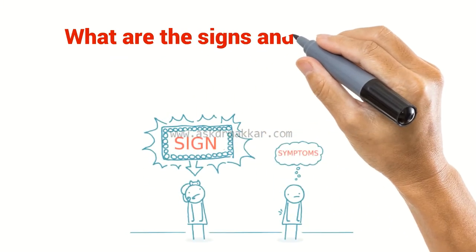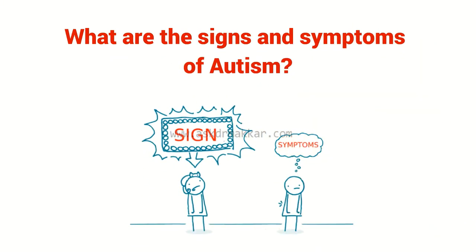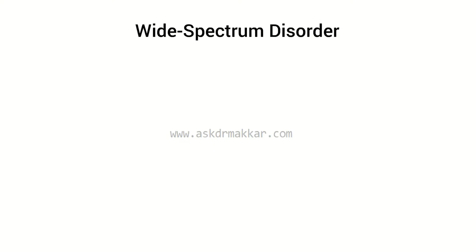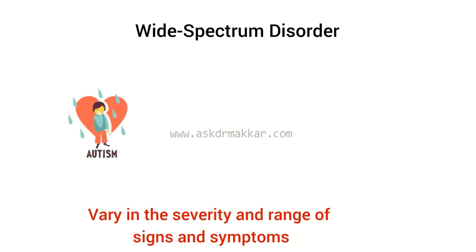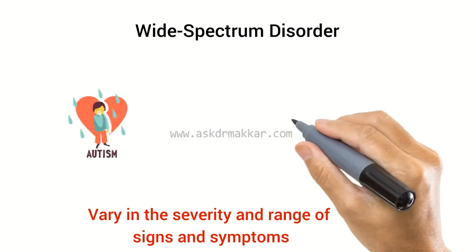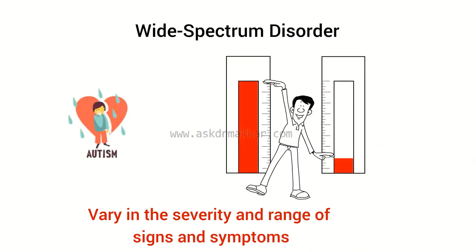What are the signs and symptoms of autism? ASD is a wide-spectrum disorder, and children with autism often vary in the severity and range of signs and symptoms, as well as experiencing varying combinations of symptoms. Some people will have mild symptoms, while others will have severe ones.